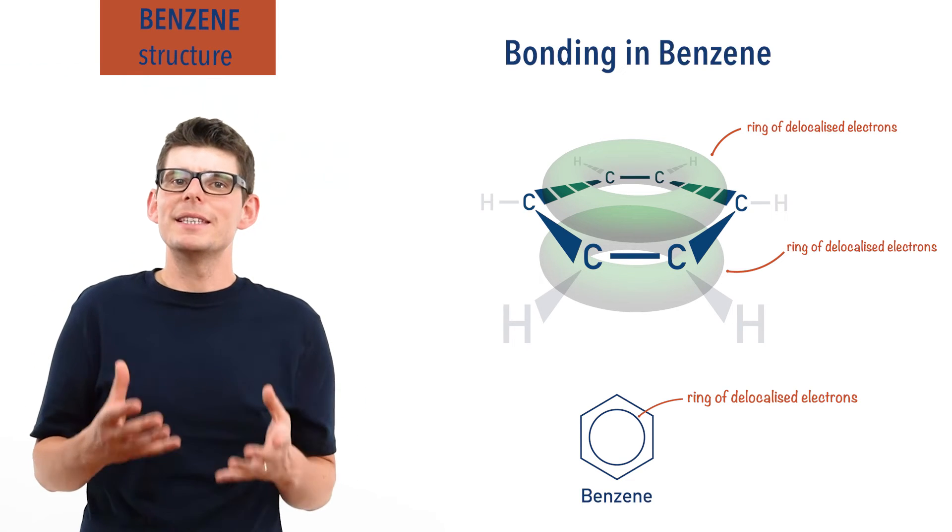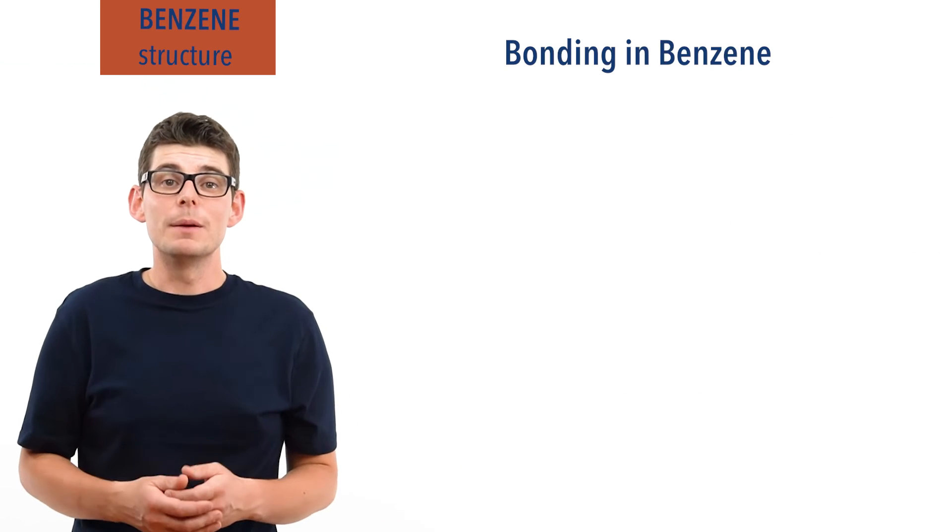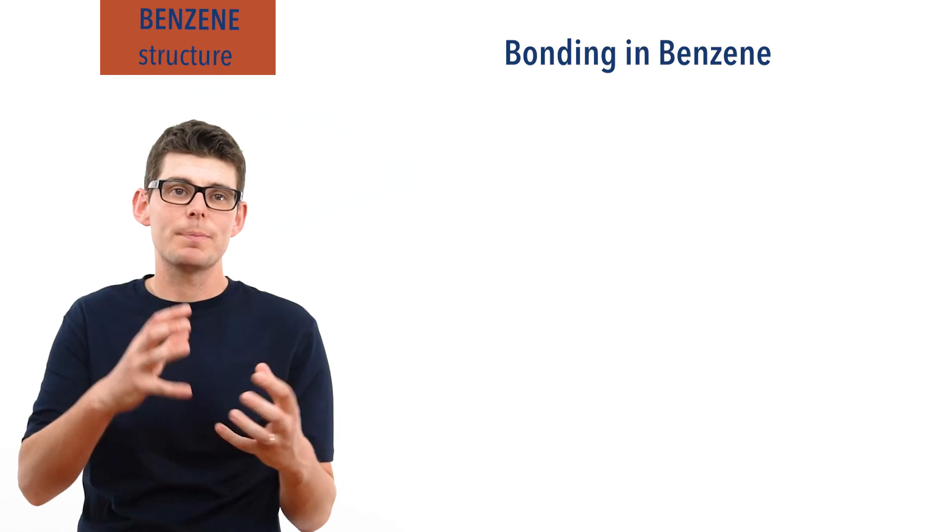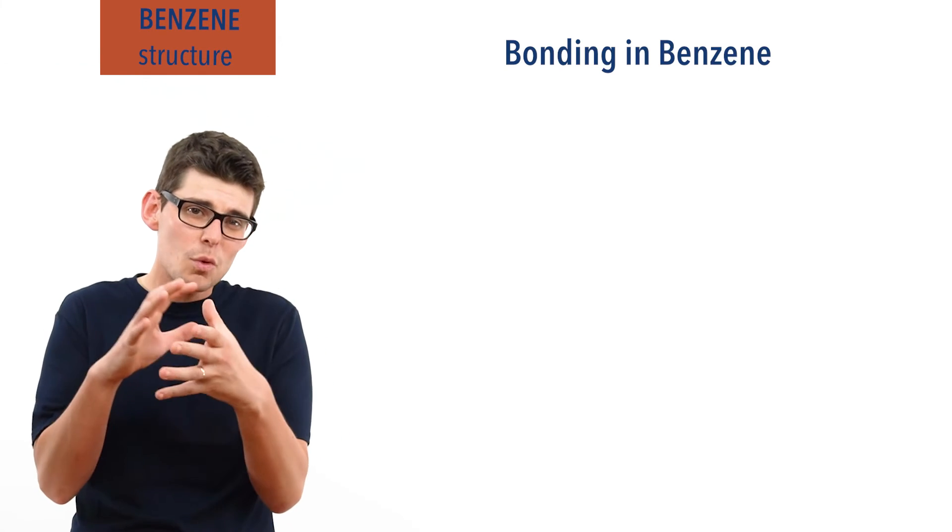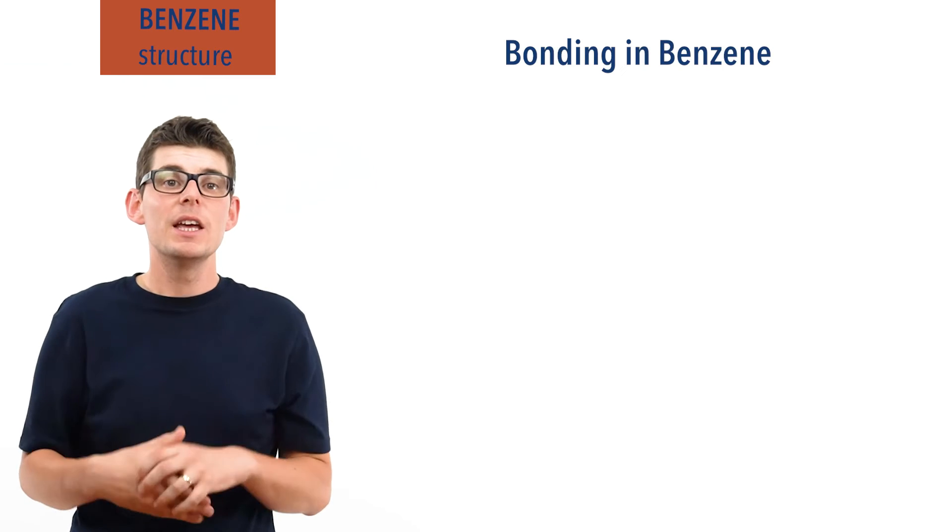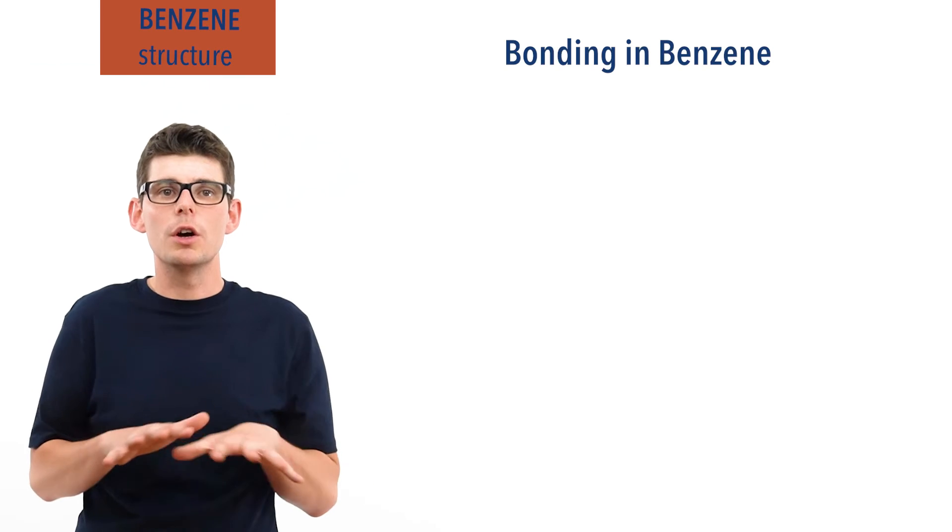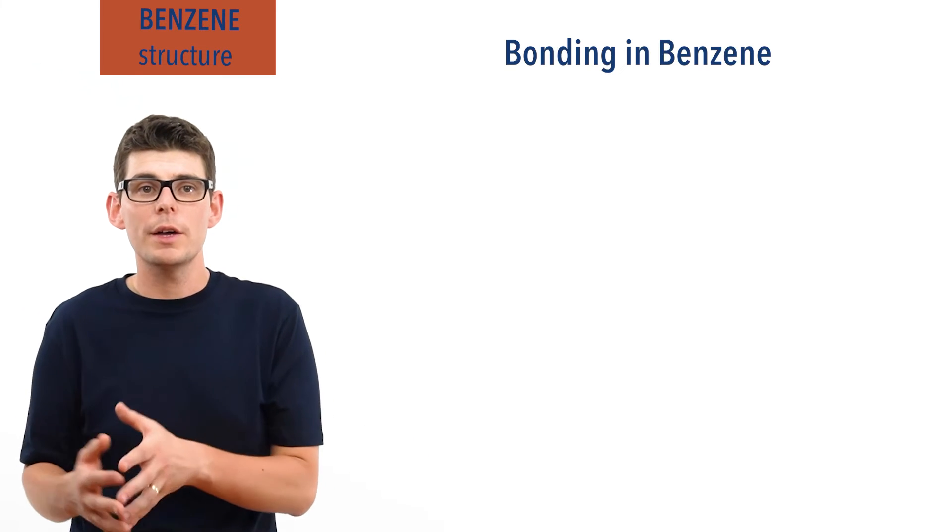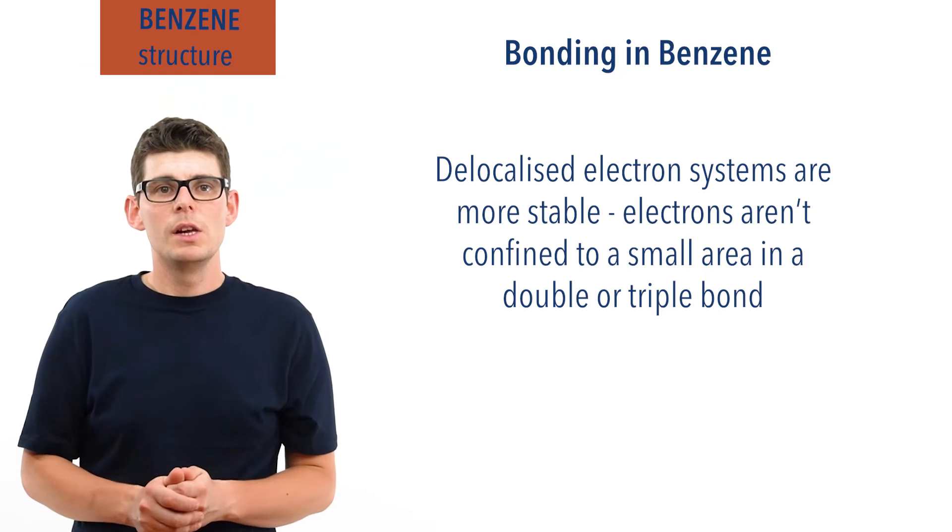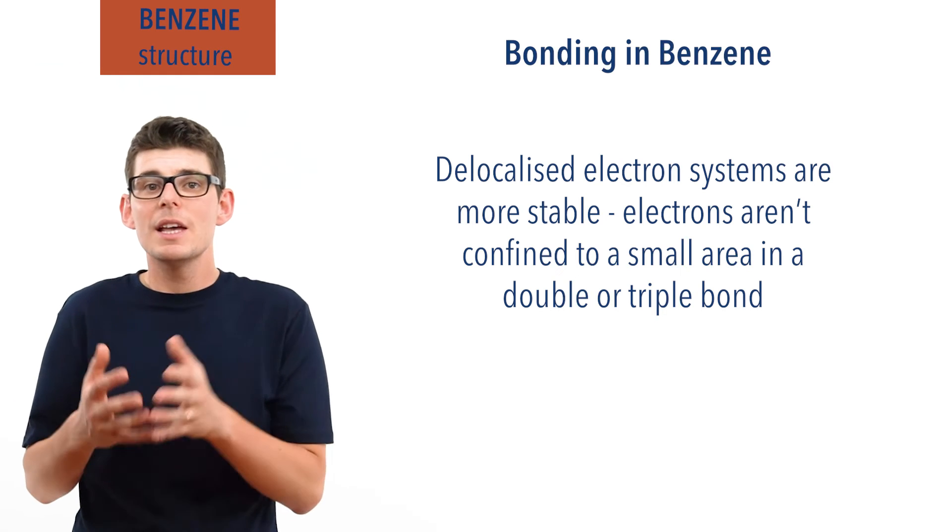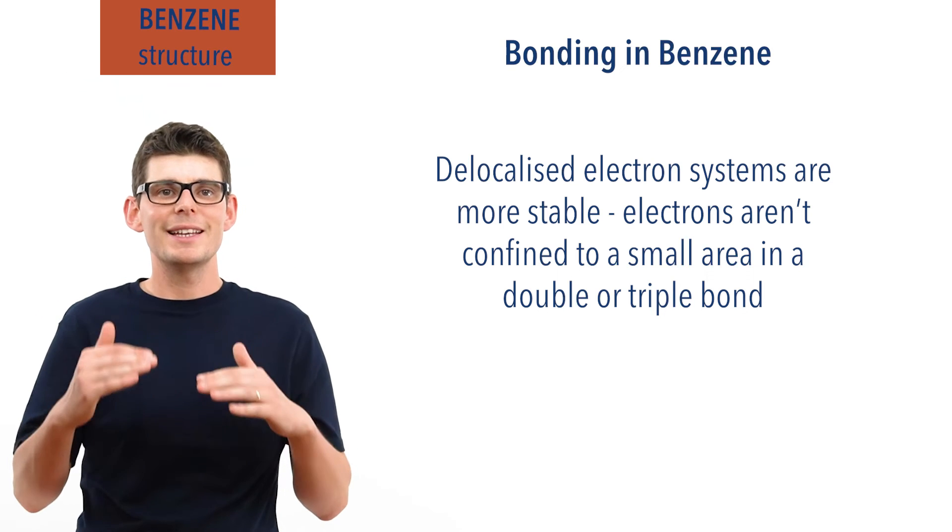So why does this make benzene more stable than expected? Well, in very simple terms, electrons are high energy charged particles, constantly whizzing and moving around. The smaller the area they are forced to be in, the higher their energy. Any time you can spread out the charge and movement of them in a molecule or ion, the more stable that ion or molecule becomes. With delocalized electron systems, electrons are free to move around in a larger area, meaning they become a slightly lower energy.